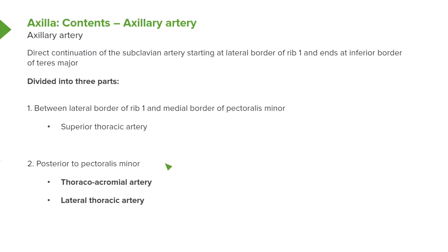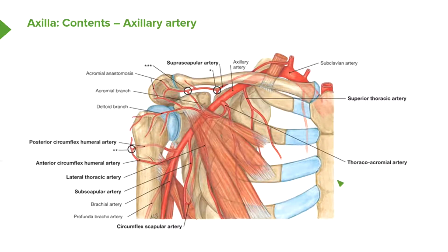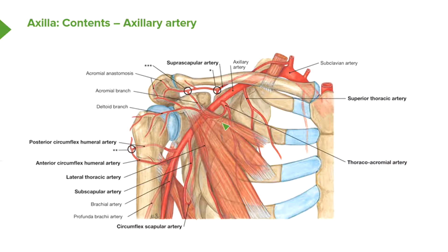The second part, which is posterior to pectoralis minor, gives rise to two blood vessels: the thoracoacromial artery and the lateral thoracic artery. The thoracoacromial artery is a small trunk that then gives rise to a whole series of blood vessels — the acromial branch, the deltoid branch, and various branches that supply this region. We will detail these more when we look at the whole blood supply to the upper limb.